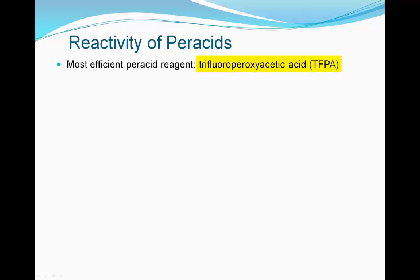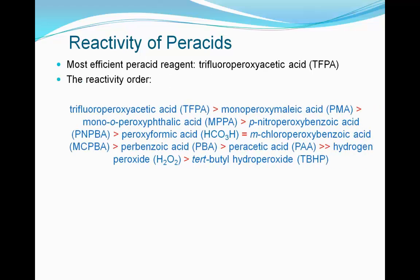Although many peroxy acids can be used in the Baeyer-Villiger reaction, trifluoroperoxyacetic acid is one of the most efficient reagents for this rearrangement. The oxidizing power of a Baeyer-Villiger reagent is related to the strength of the conjugate acid of the leaving group. Thus, the reactivity order is TFPA > PMA > MPPA > PN-PBA > peroxyformic acid > MCPBA > PBA > PAA > hydrogen peroxide > t-BHP.